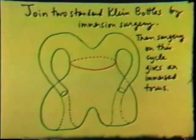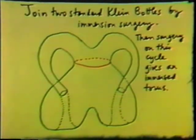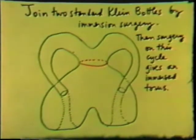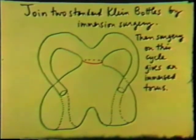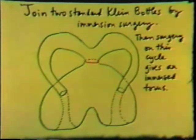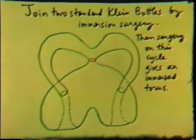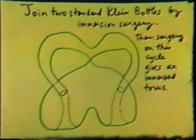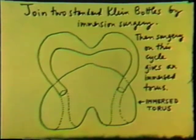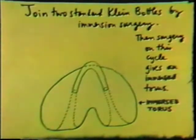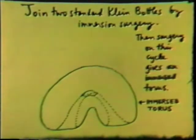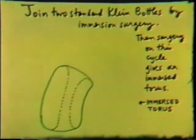Then surgery on this cycle gives an immersed torus. The cycle is disappearing. Now we have an immersed torus. This torus is regularly homotopic to an embedding. The torus now bounds its interior and is consequently immersion cobordant to zero.